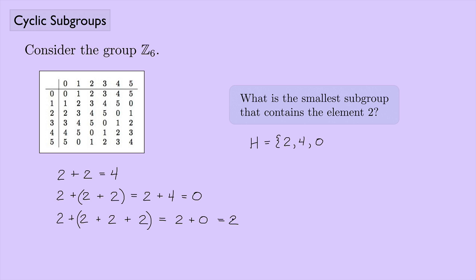If we keep going — adding 2 plus 2 plus 2 plus 2 plus 2 — we end up back at 4, then back at 0, cycling through everything. So this is our subgroup: it has identity element 0, it has closure, and it is indeed a subgroup containing element 2.